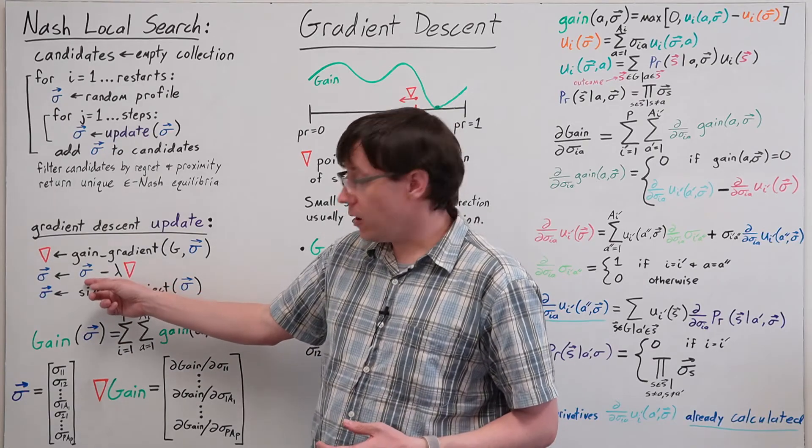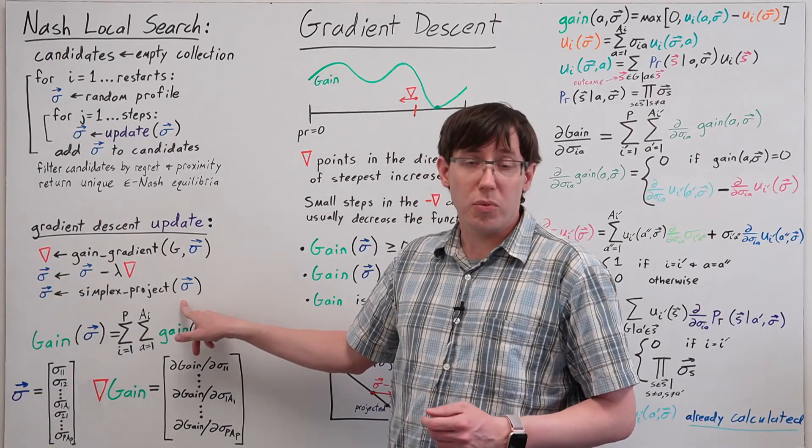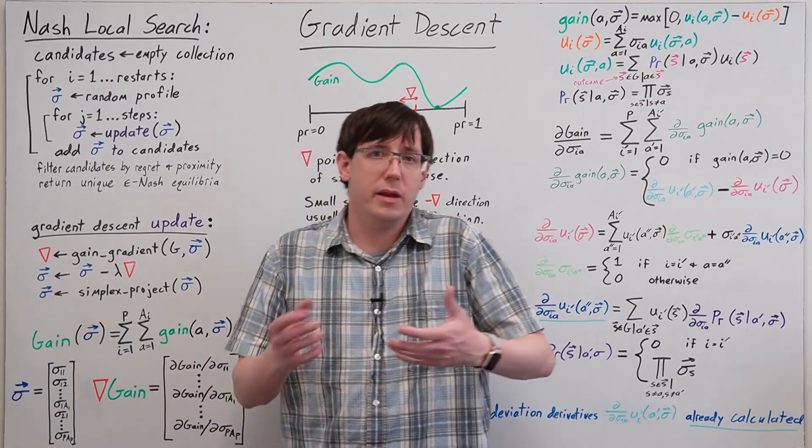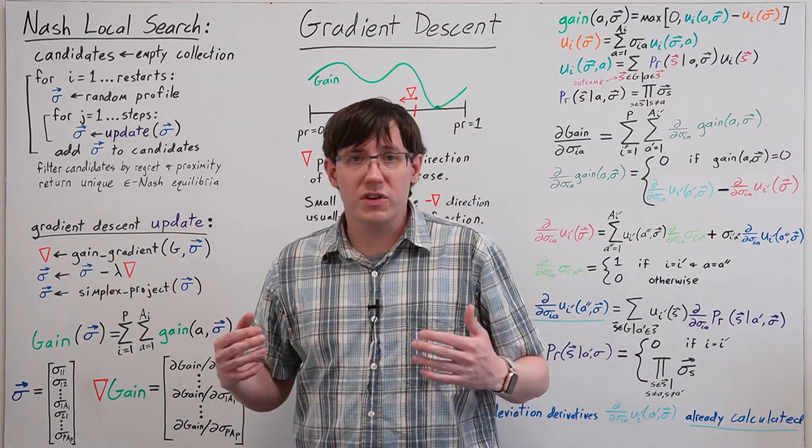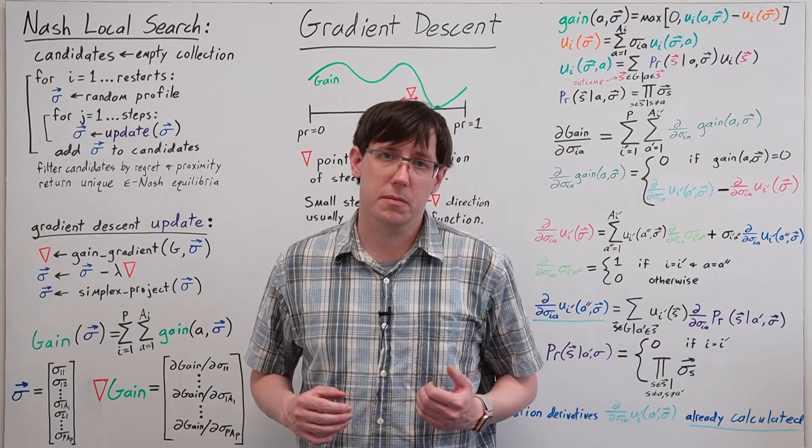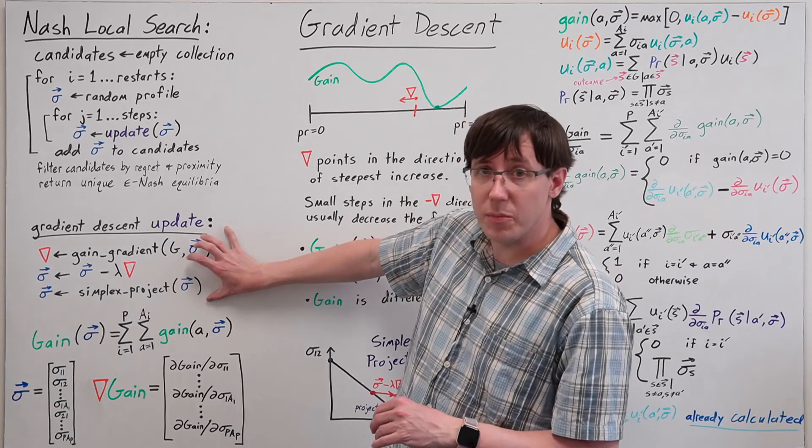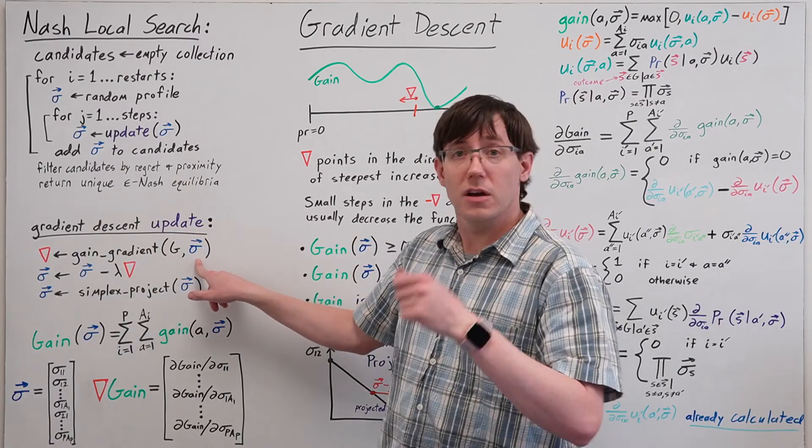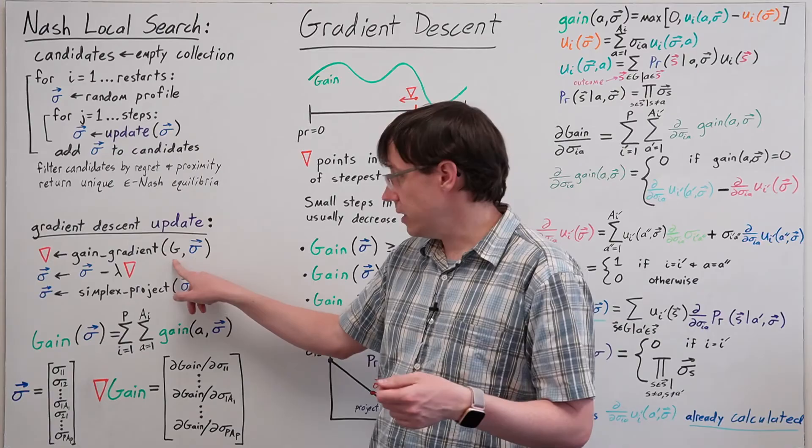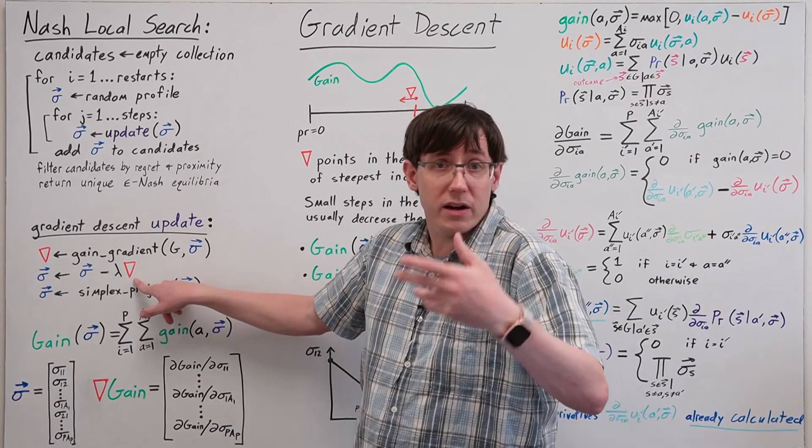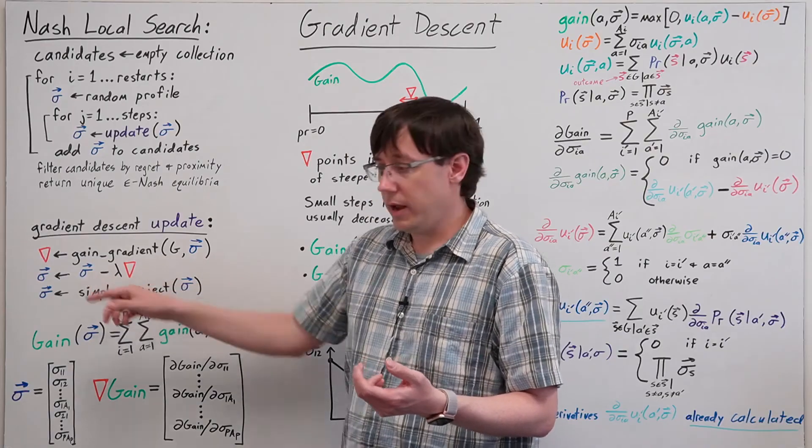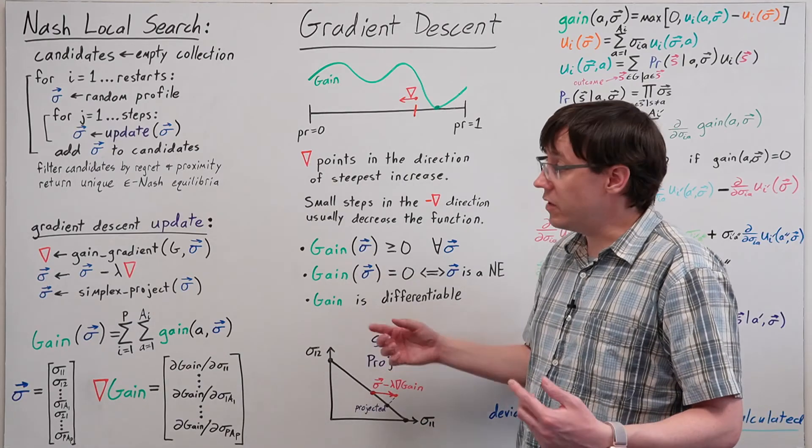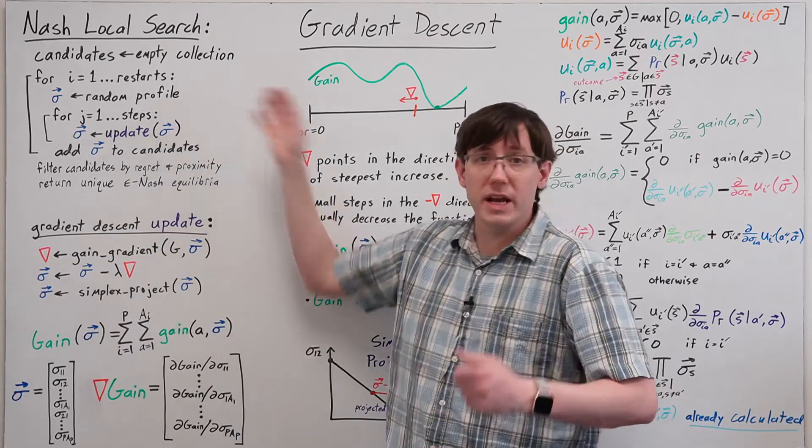After taking our gradient descent step, we need to project that profile back onto the simplex. This projection is similar to, but slightly more complicated than, the normalization step that we saw in other algorithms like replicator dynamics. Overall, our gradient descent update will first calculate the gradient of total gain at the current mixed strategy profile in the game that we're solving, then it will subtract some small multiple of the gradient from the profile and project the resulting profile back onto the simplex, giving us a new profile that we can use in the next iteration.